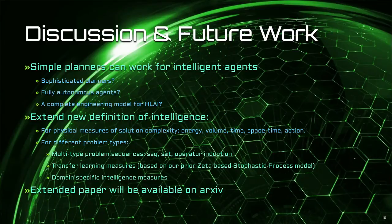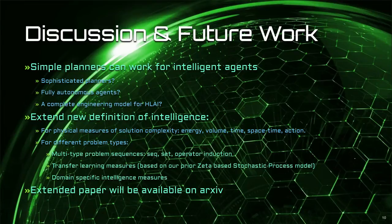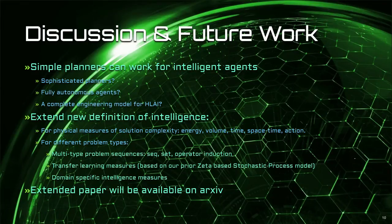We conclude with some discussion and future work. Simple planners can work for intelligent agents, confirmed by two new agent models in the literature introduced subsequent to the initial version of this paper. Some questions to ponder are: can we do the same for sophisticated planners? Can we design a full autonomous agent based on the same approach? Could we arrive at an optimization problem that covers all the important aspects of intelligent agents? Or could we derive a complete engineering model that can achieve human-level AI? We can also extend this new definition of intelligence for physical measures of solution complexity — energy, volume, time, space-time, action — and extend it for different problem types: multi-type problem sequences including sequence, set, operator induction, and transfer learning measures based on our prior stochastic process model. Can we derive domain-specific intelligence measures based on the same approach? An extended version of this paper including more mathematical details and proofs will be available on archive, since the conference version was intended for a more general audience.